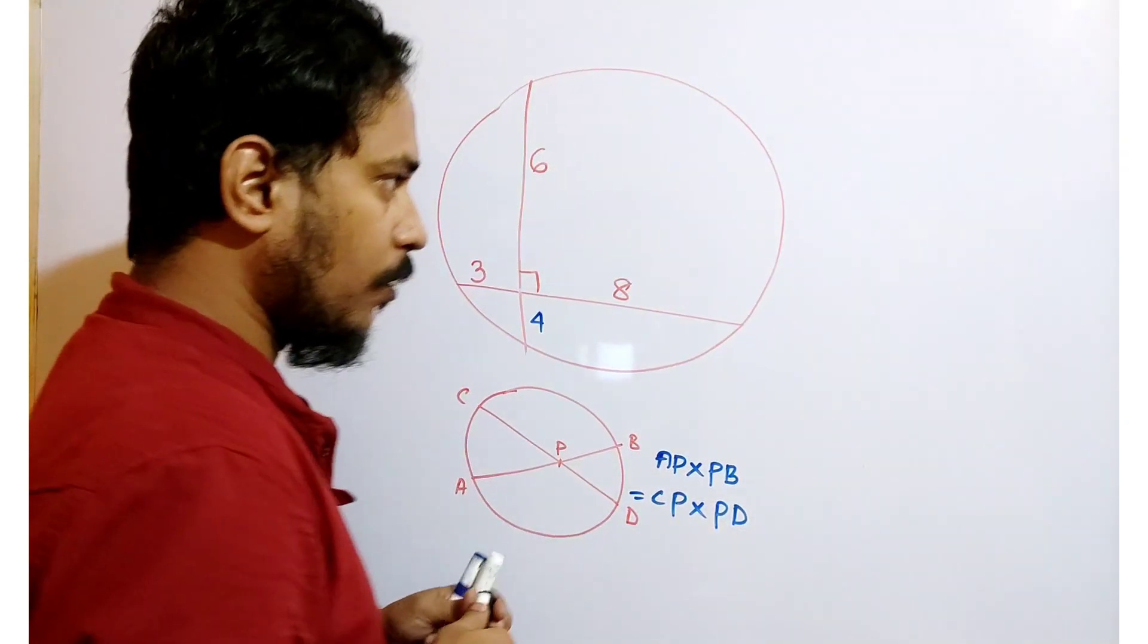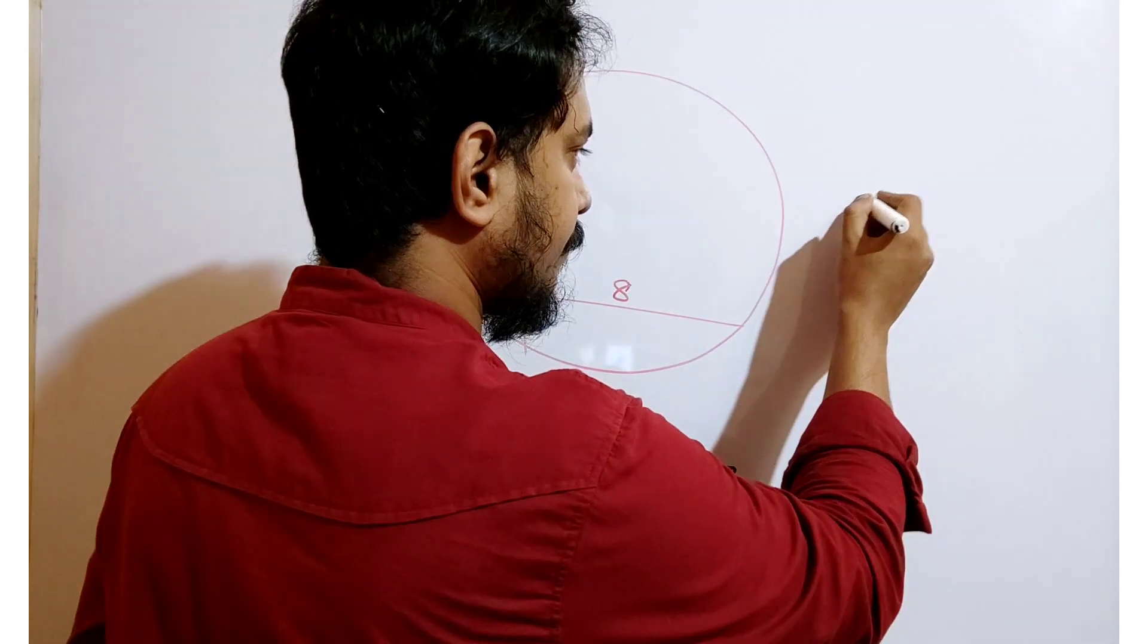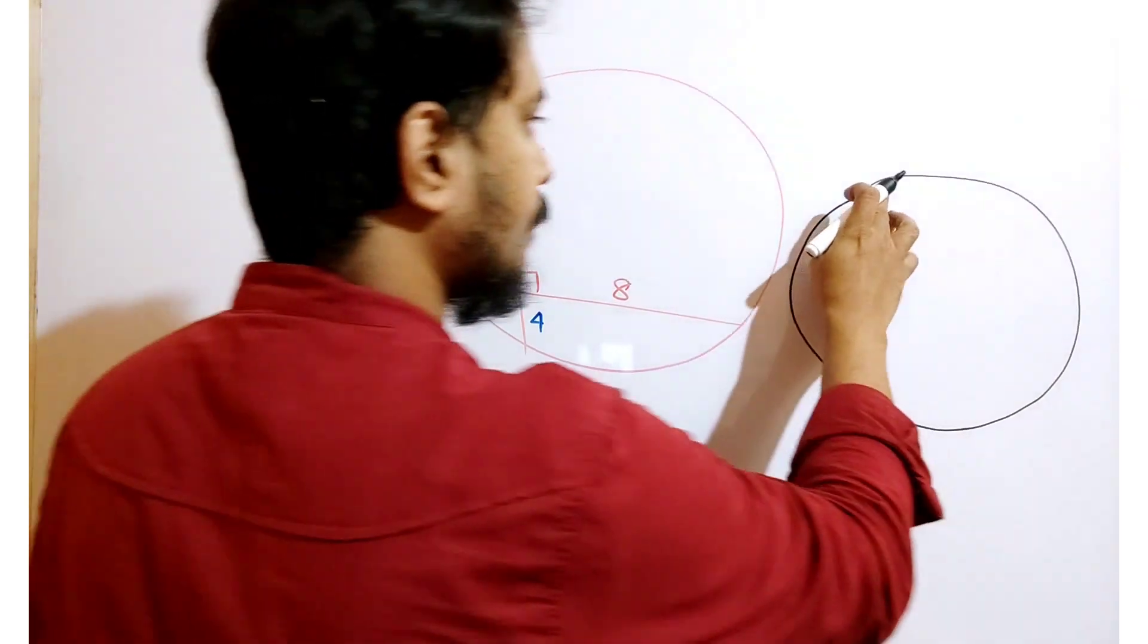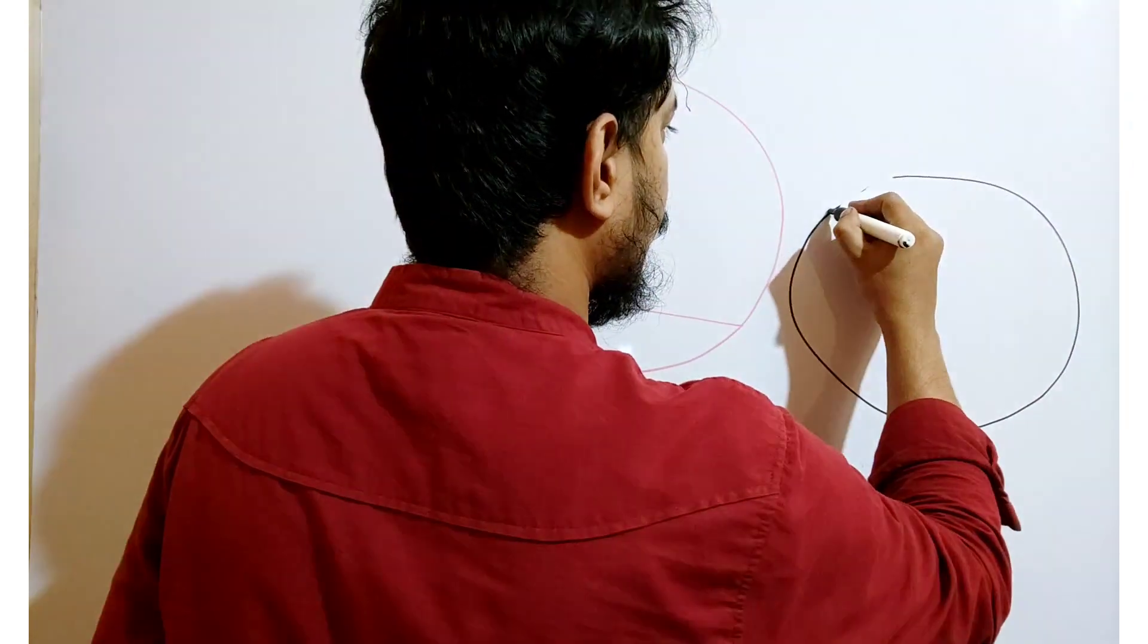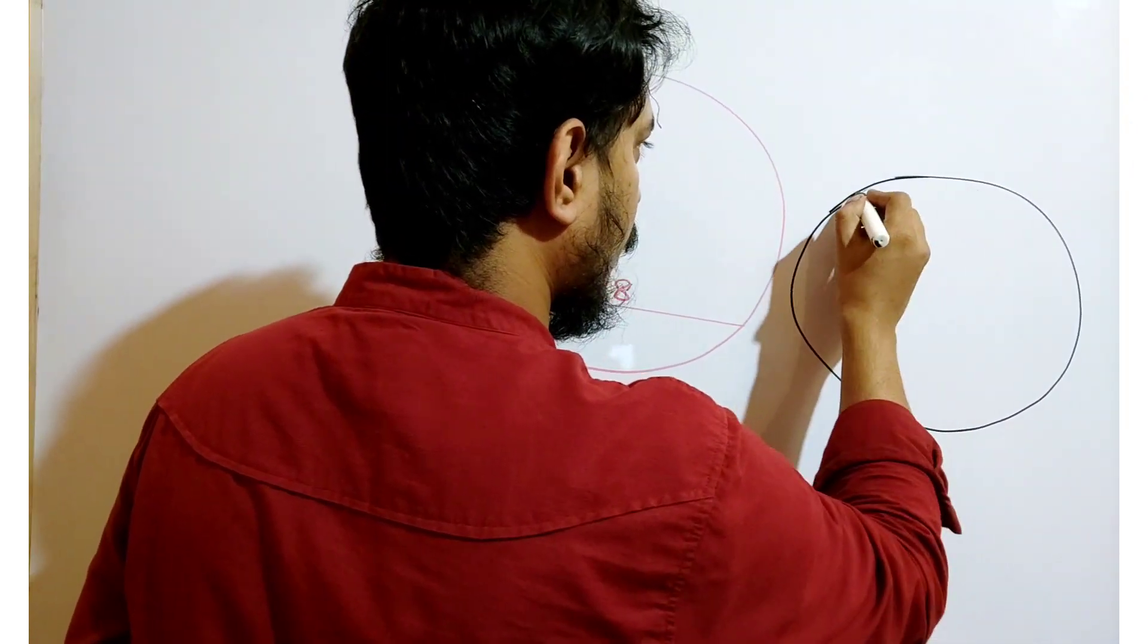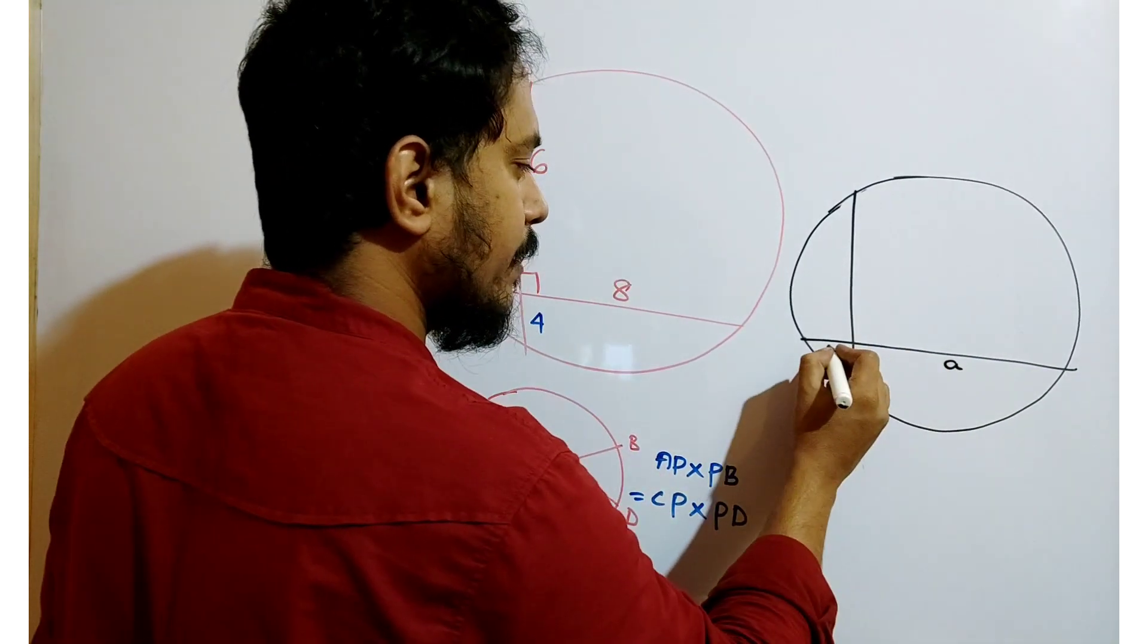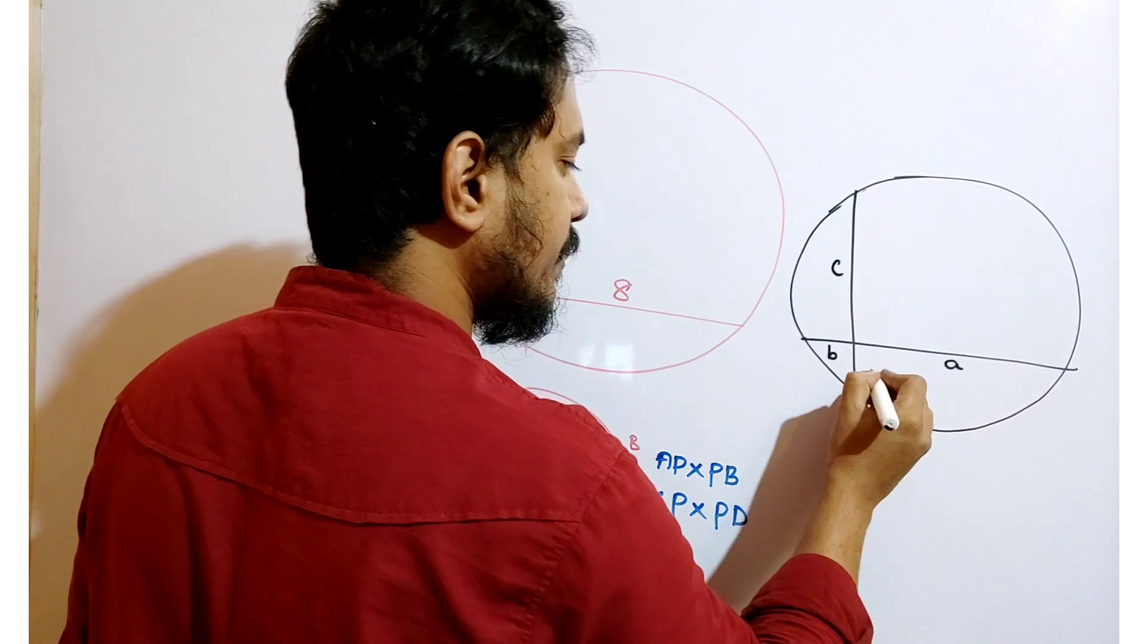look at this concept. This length is A, this length is B, this length is C, this length is D. So this is a chord,